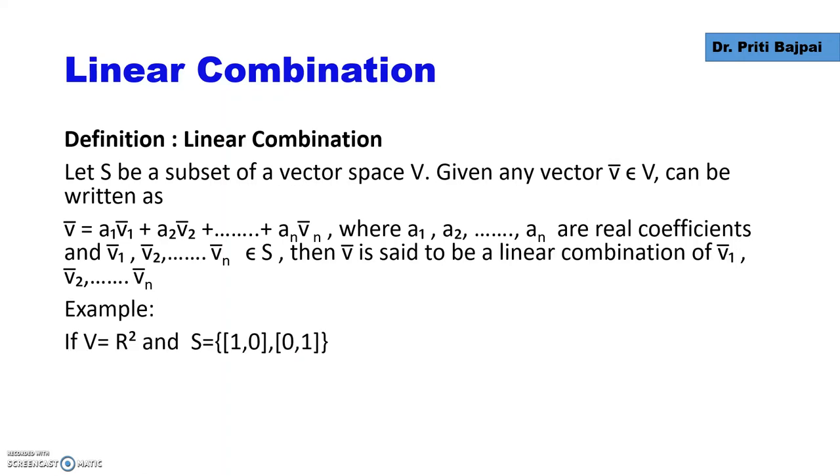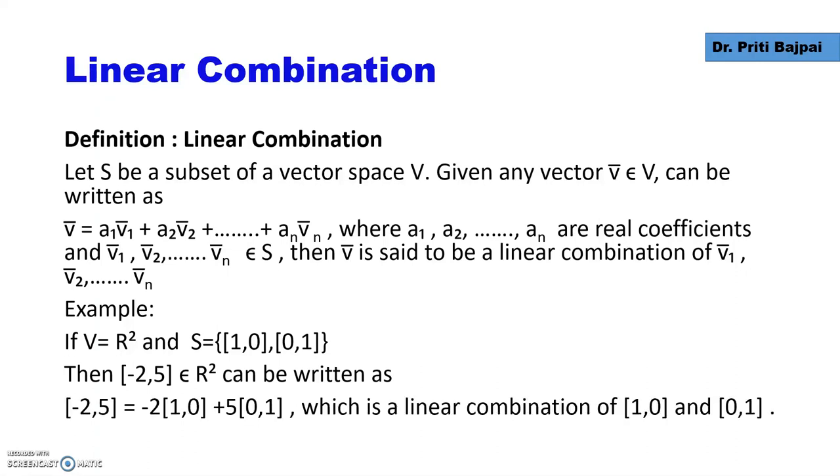Let's take some example. If we take V to be the vector space R² (the plane) and take some subset of R² as [1,0] and [0,1], if we want to write some vector [-2,5] from R² we can write it as -2 times [1,0] plus 5 times [0,1]. This is a linear combination of the two vectors [1,0] and [0,1].